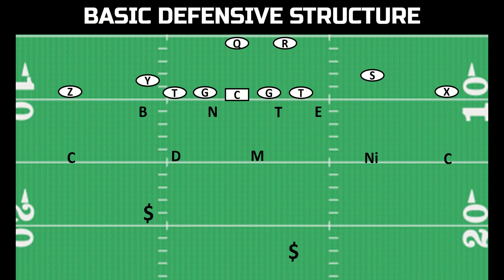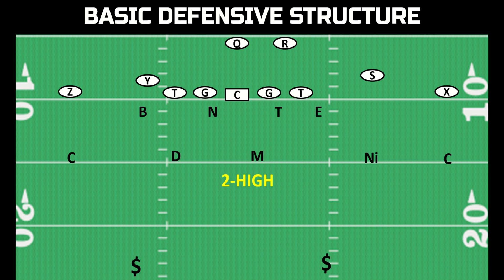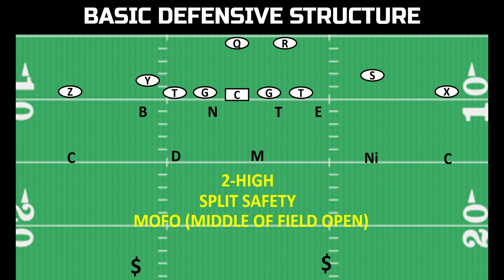Then you have the other category, which is called two high. It's one high or two high. You have post safety or split safety because you are essentially splitting the field in half — one safety to one side, one to the other. And instead of middle of the field closed, it's called middle of the field open. Two high, split safety, middle of the field open — all mean the same thing, and this is the opposite of one high, post safety, middle of the field closed.